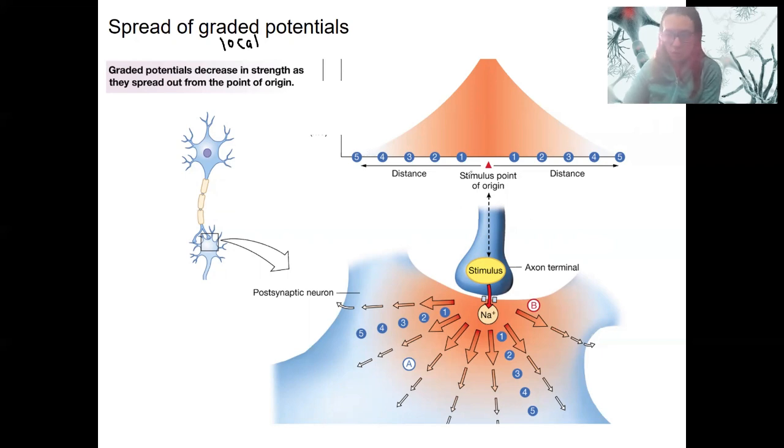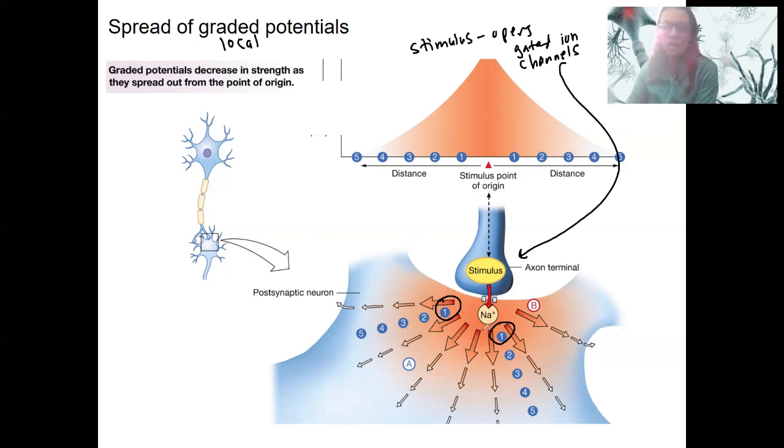So a stimulus, here's our stimulus. This is the location here. A stimulus opens gated ion channels. The stimulus is typically going to be a neurotransmitter. It could be a physical stimulus for mechanical ion channels. So sodium, for example, here is our stimulus opening sodium ion channels. The membrane potential changes the most at this site of stimulation. So site number one here, right next to where that stimulus was.